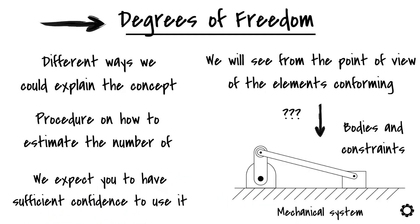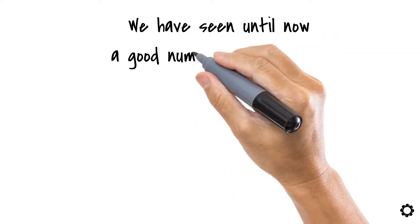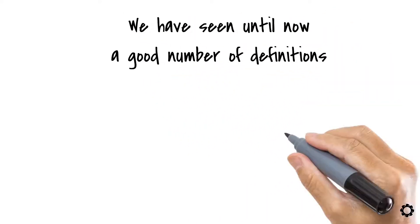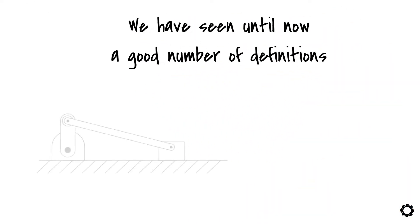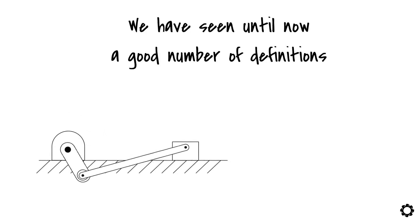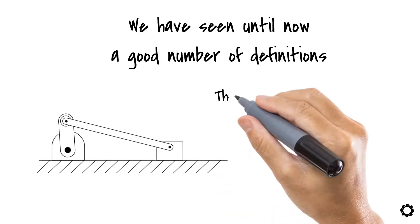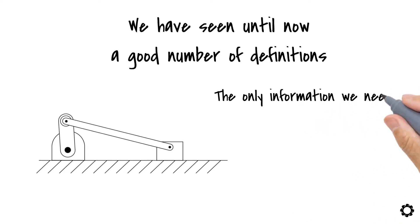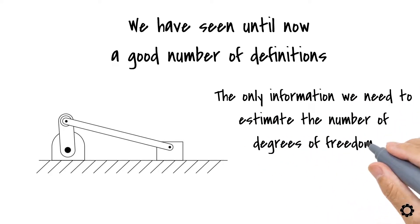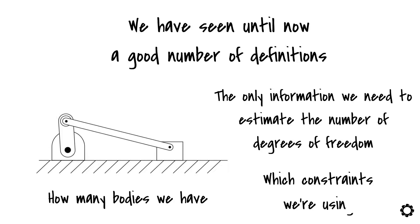How should we start this topic? We have seen until now a good number of definitions related to our course. We have talked, for instance, about moving bodies. You'll be surprised, but the only information we need to estimate the number of degrees of freedom is how many bodies we have and which constraints we are using.